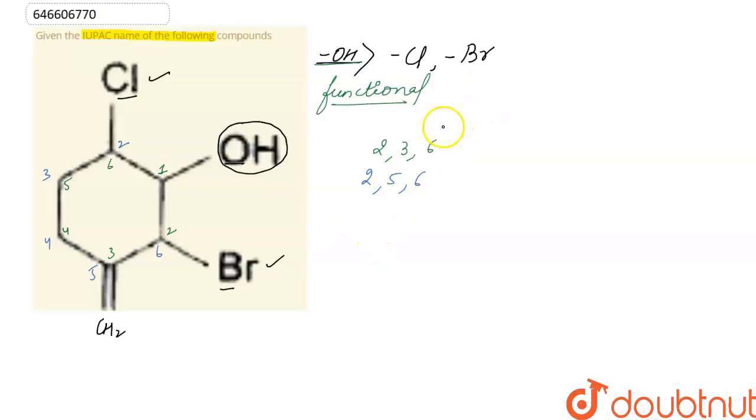According to numbering rules, we have to choose the lowest set of locants. Here the lowest set is 2, 3, and 6. So the numbering pattern is where Br gets second position, the methyl doubly bonded CH2 gets third position, and Cl gets sixth position.